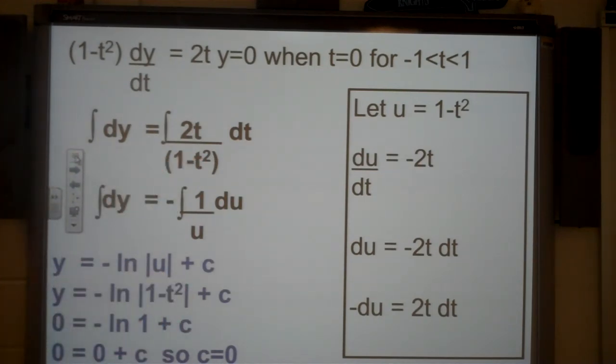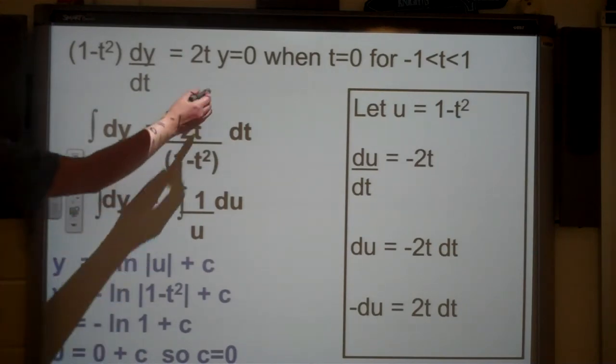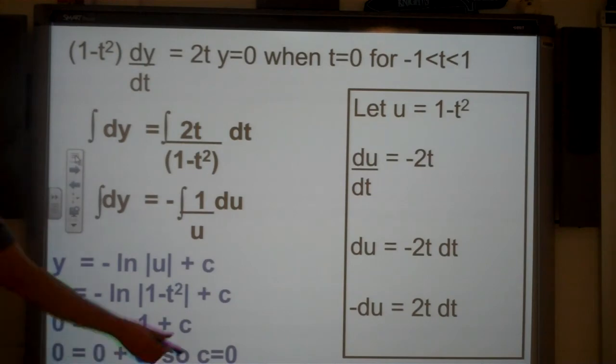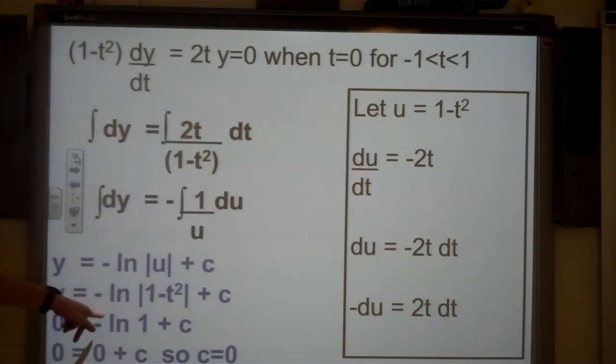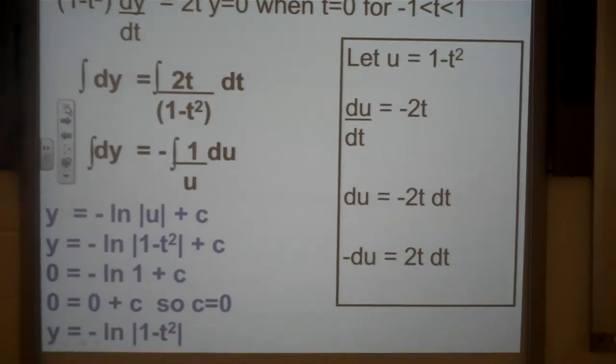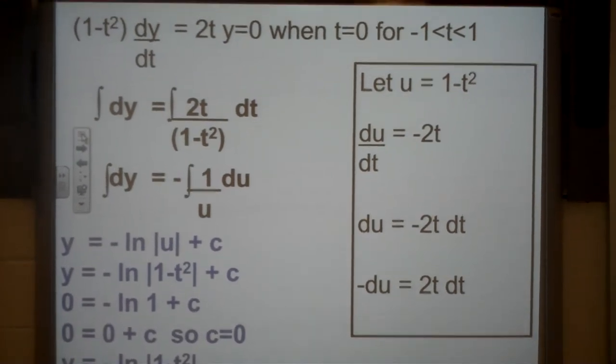Now this time we don't need the general solution because we have some initial values, so we can go ahead and substitute those in. So when y is 0, substitute that in, t is 0, and we can plug that in as well. And as the ln of 1 is 0, 0 equals 0 plus c, so actually our constant for this question is just 0, so we can say that our equation is y equals negative ln of 1 minus t squared. And it looks like that's just hanging off the bottom of the board, so let me just lower that so you can see that.